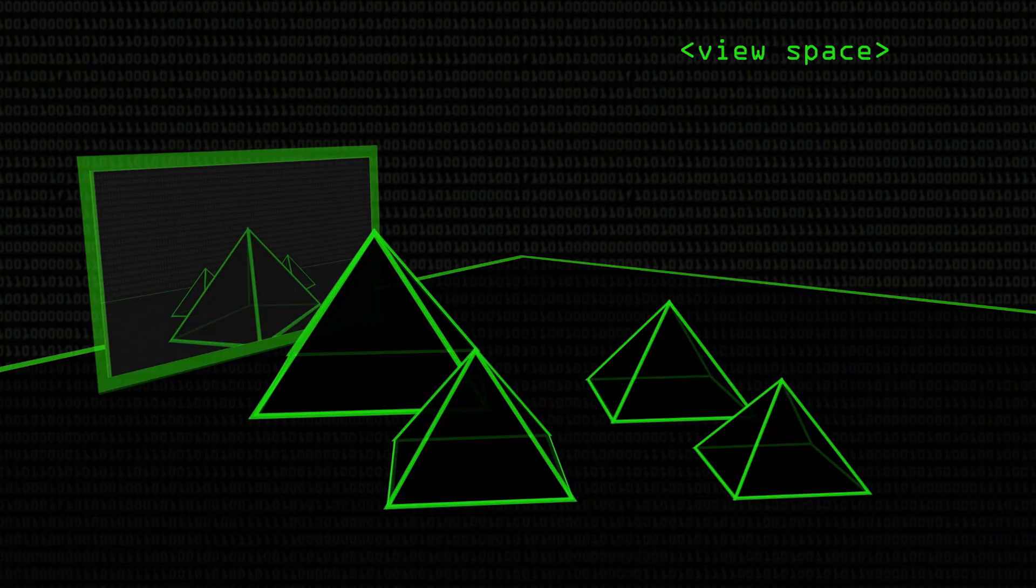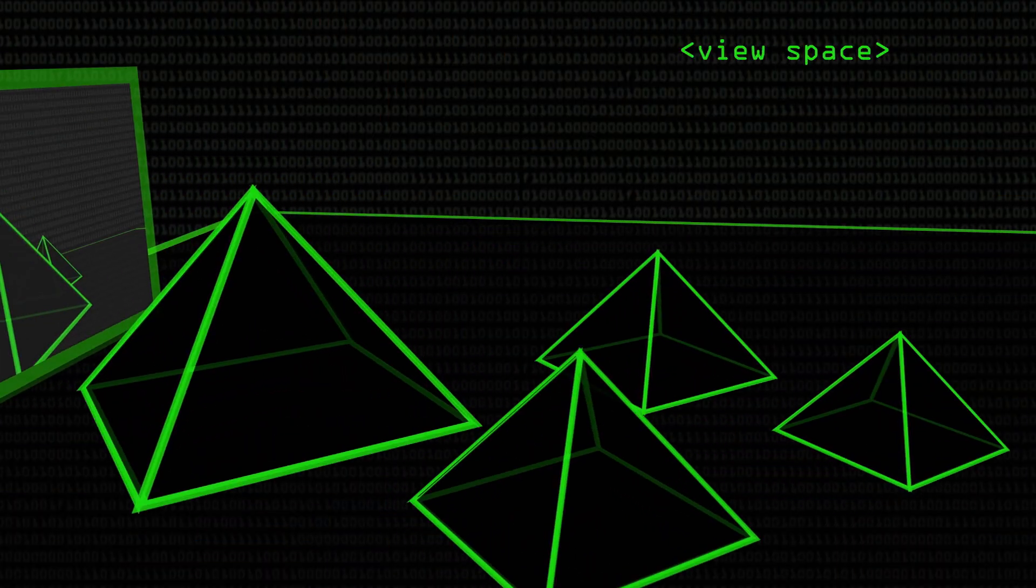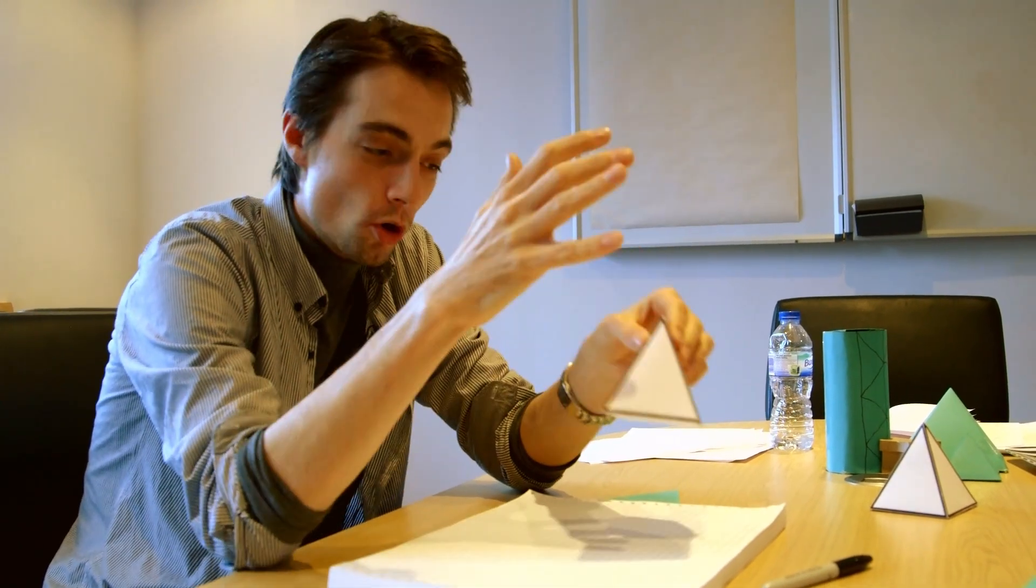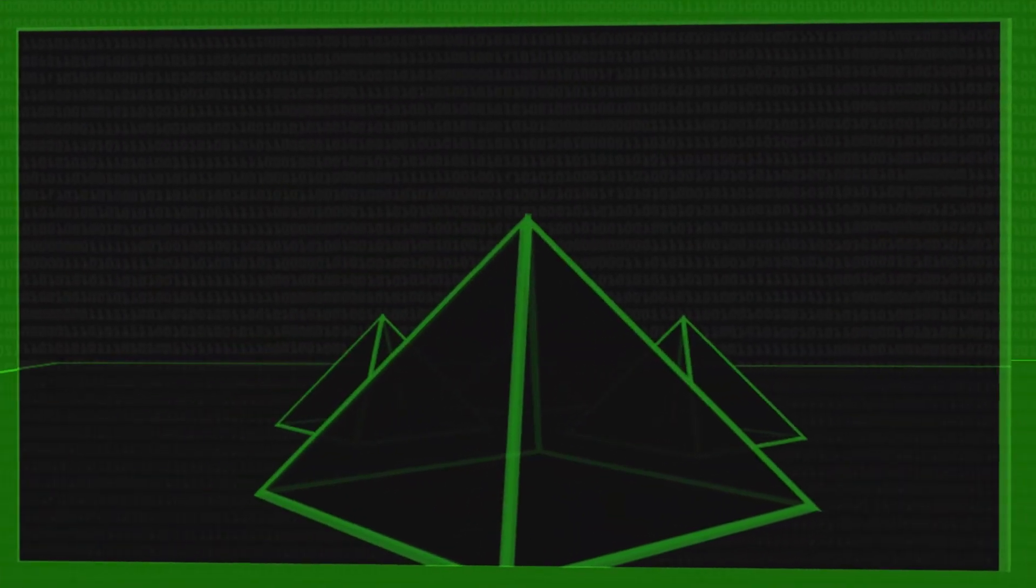We have taken our 3D object, specified its vertices relative to an origin in a coordinate reference frame. What happens to a triangle to turn it from this representation that we've got, the vertices, the faces, into pixels on the screen?